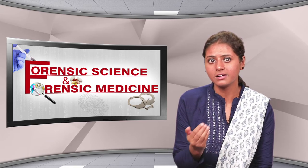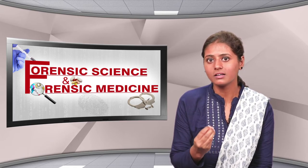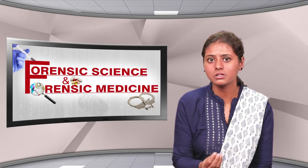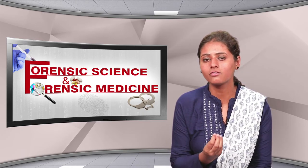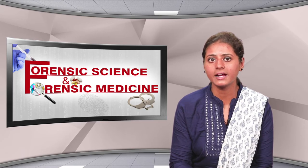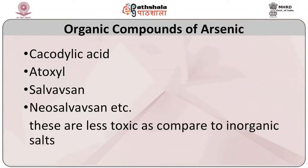Industrial sources include smelting of metals and arsenical generation of power from coal, and geothermal sources including combustion of coal. Inorganic compounds include arsenic trioxide (As2O3), copper arsenide known as Scheele's green or Paris green, red arsenic (arsenic disulfide), yellow arsenic (arsenic trisulfide), and arsine gas (AsH3) which is hemolytic and nephrotoxic. Organic compounds include cacodylic acid, sodium cacodylate, atoxyl, salvarsan, and neosalvarsan.